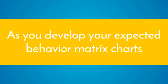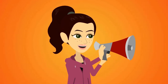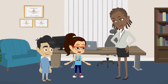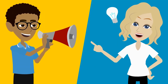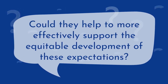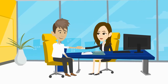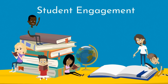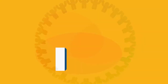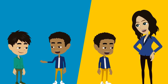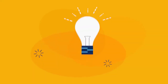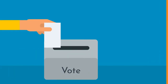As you develop your expected behavior matrix charts, it's vital to decide whose voices are being included or silenced at the decision-making table. Is there an opportunity for students to join this process and exercise their voice and agency? Could they help to more effectively support the equitable development of these expectations? Just like educators appreciate being seen, heard, and valued, so do students. This is a perfect time to cultivate student engagement and belonging. Youth provided with opportunities to co-create equitable solutions through collaborative problem solving and responsible decision-making help strengthen democratic learning environments so all kids can thrive.